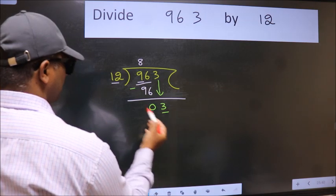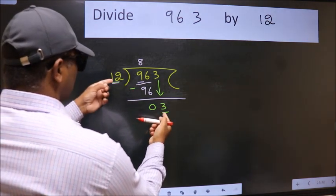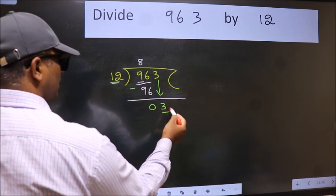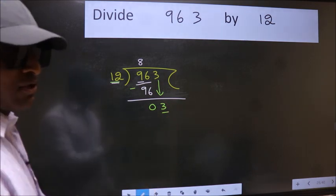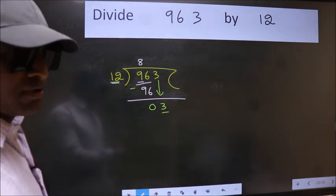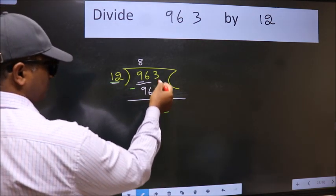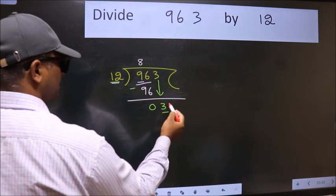Here we have 3 and here 12. 3 is smaller than 12. So what many do is they directly put dot, take 0, which is wrong. Why is it wrong? Because just now you brought this number down and in the same step you want to put dot, take 0, which is wrong.